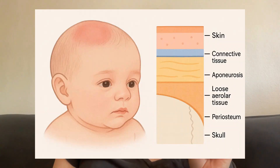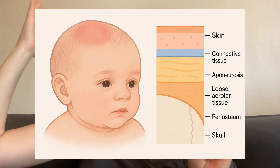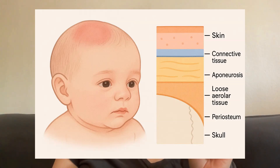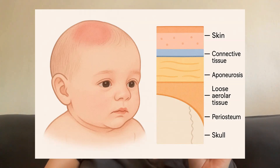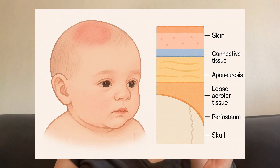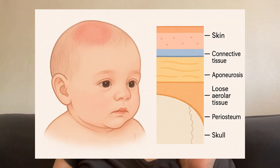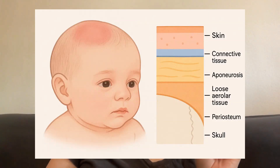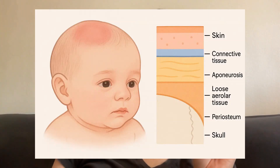One thing to think about is the overall anatomy when thinking about the layers of the scalp. A good mnemonic to help you remember that is just SCALP. From the outermost to the innermost: S is for skin, C is for connective tissue — the dense section where blood vessels run — A for aponeurosis or the galea aponeurotica, the tough fibrous tissue, L for loose areolar tissue, and P for periosteum, which is right above the skull bone.